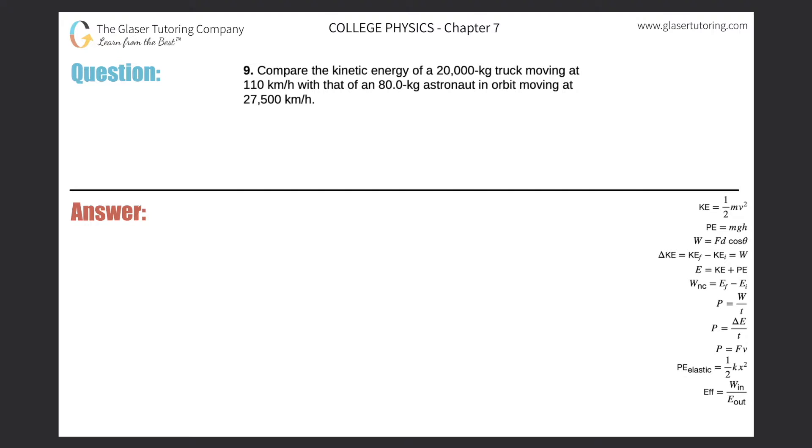Number nine, compare the kinetic energy of a 20,000 kilogram truck moving at 110 kilometers per hour with that of an 80 kilogram astronaut in orbit moving at 27,500 kilometers per hour. Alright, so basically we just got to calculate the kinetic energies.